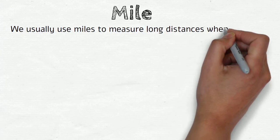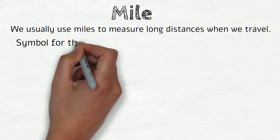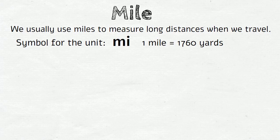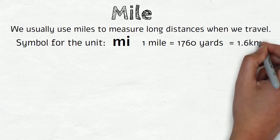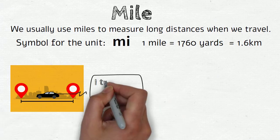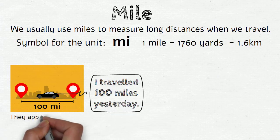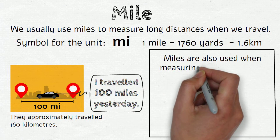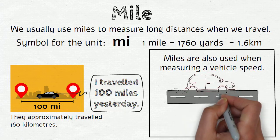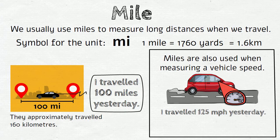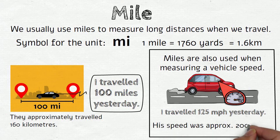Now miles. We usually use miles to measure long distances when we travel. The symbol for the unit is mi. 1 mile equals 1,760 yards. It also is approximately 1.6 kilometers in a metric system. So if someone says 'I travelled 100 miles yesterday,' it means that his speed was approximately 200 kilometers per hour.